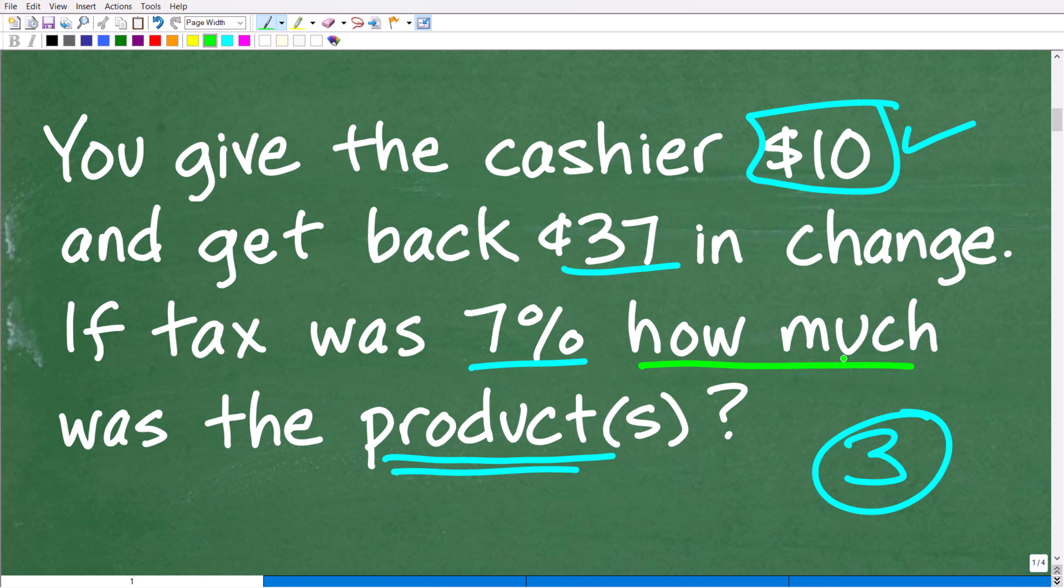But anytime we have an unknown value, so here, how much was the product? This is an unknown value. We don't know how much the product was.